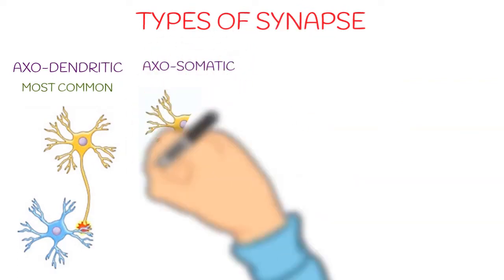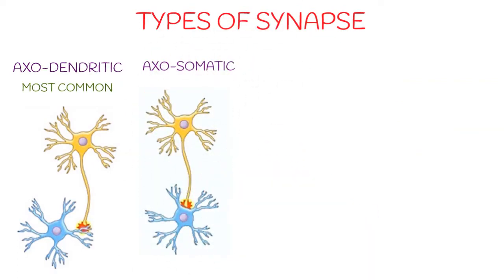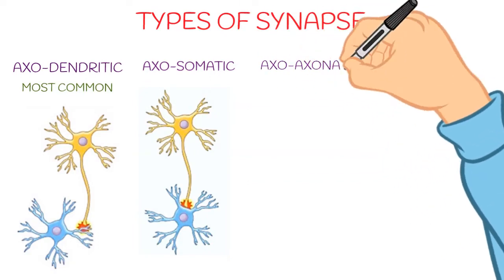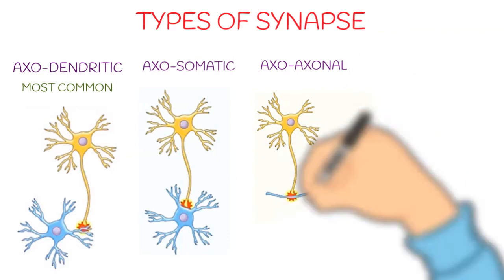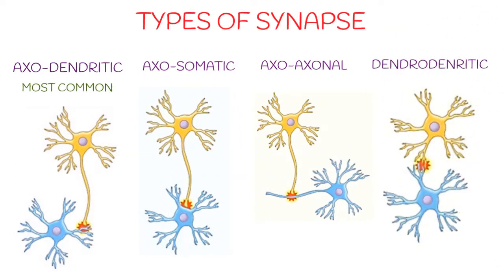Next is axosomatic, according to name between axon and soma or cell body, and this diagram clearly depicts this. Third is axo-axonal, between axons of two neurons. And fourth is dendrodendritic, this is very rare. In this, two neurons' dendrites will form synapse. You can clearly see it in the diagram.